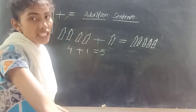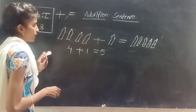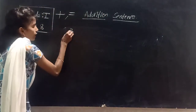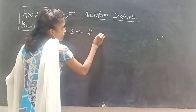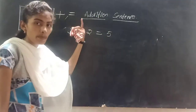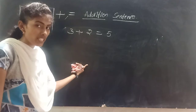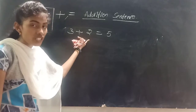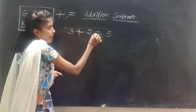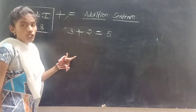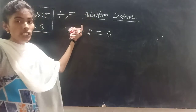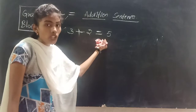Represent the pictures by using addition sentence. For example, now I am giving a number to you: three plus two is equal to five. You have to represent this addition sentence by drawing pictures. How can we say it is an addition sentence? Because we have a plus symbol and is equal to symbol. In the addition sentence we must use plus and is equal to signs.